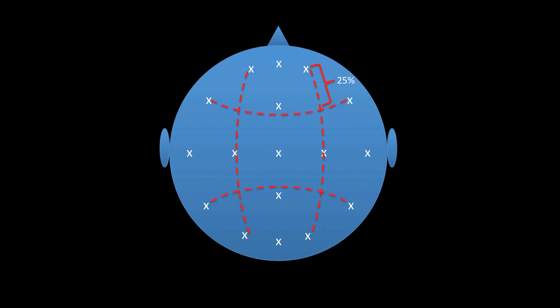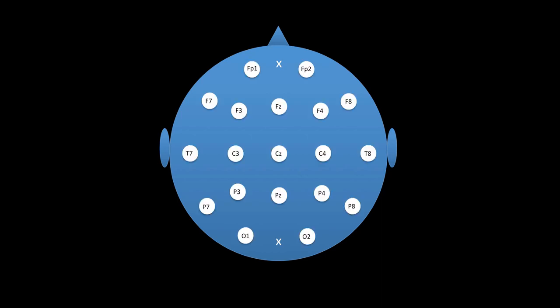Finally, transverse measurements are made. The intersections of these lines are where the final electrodes are placed. Once all of these marks have been placed, the electrodes can be applied to the scalp of the patient.